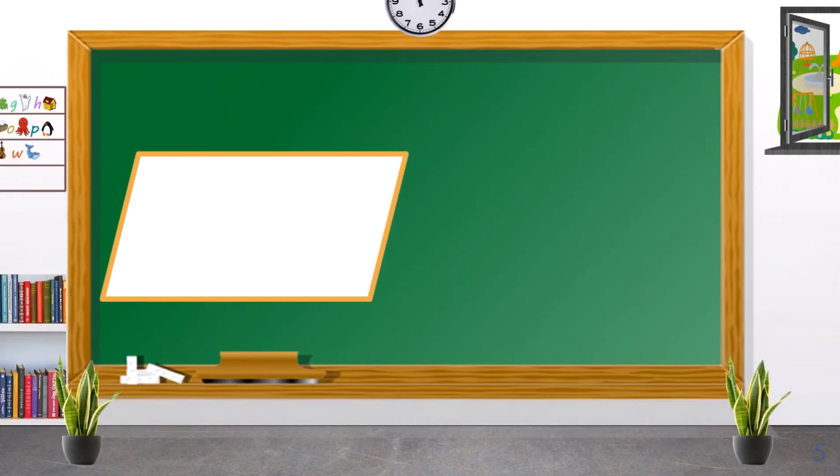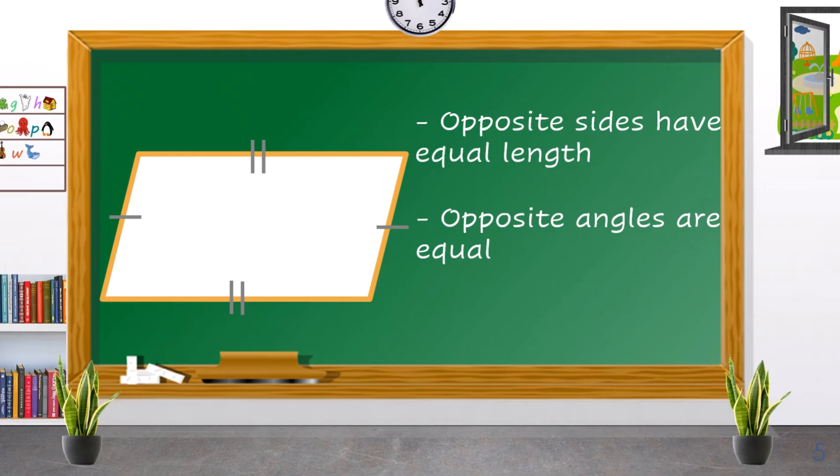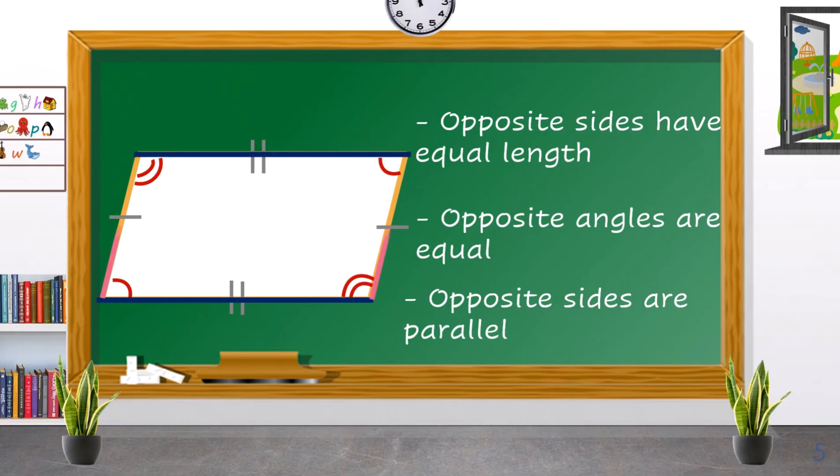The next type of quadrilateral has opposite sides that are equal. The length at the upper is equal to the length at the lower side. The length at the right side is equal to the length on the left side. The opposite angles are equal, and the opposite sides are parallel. This is what we call a parallelogram.